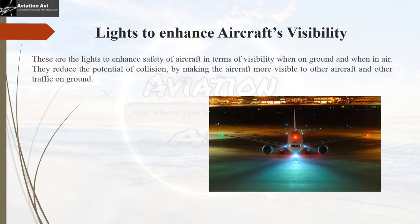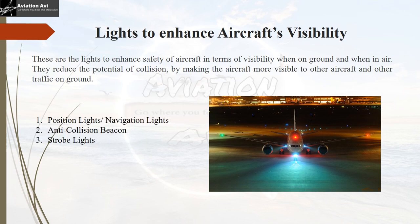We will start with the lights that enhance aircraft visibility — basically lights to enhance safety of the aircraft in terms of visibility when on ground and in air, to reduce the potential of collision. There are three lights for this purpose: number one, the position light or navigation lights; number two, the anti-collision beacon; and number three, the strobe lights.